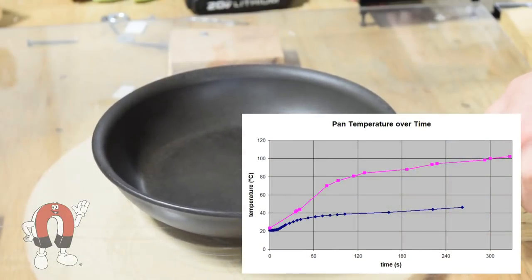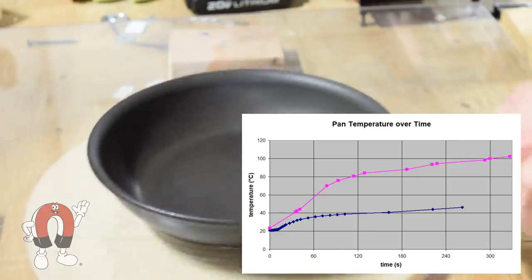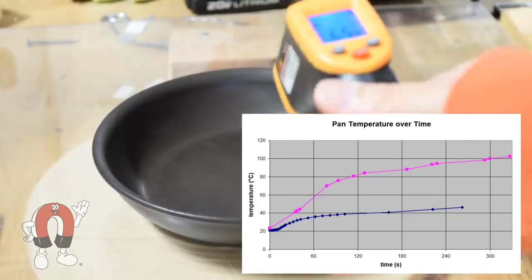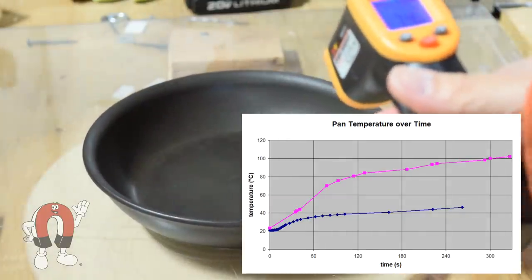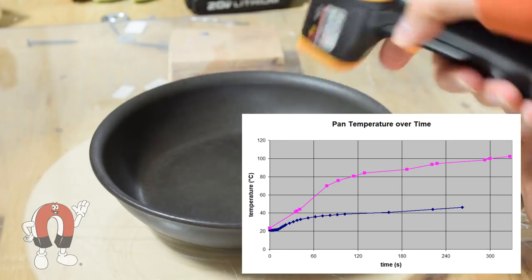We switched to a smaller and thicker aluminum pan, which definitely helped. This pan reached almost 150 degrees Fahrenheit. Still not quite enough.